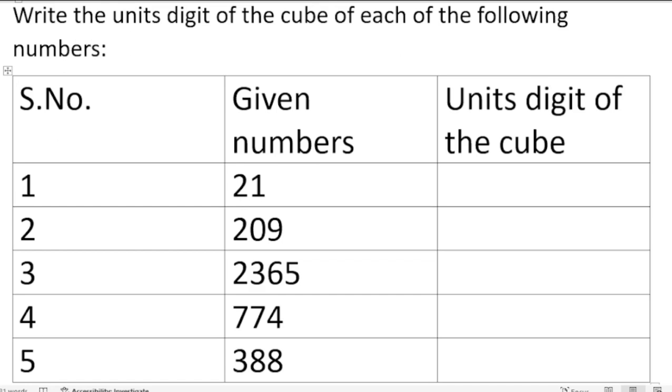Let us write down 7. The cube of 7 is 343. They are just asking for the units digit. We know that units, tens, hundreds—so in the units digit, what do we get?